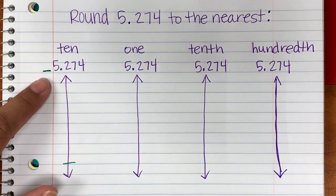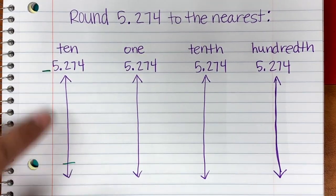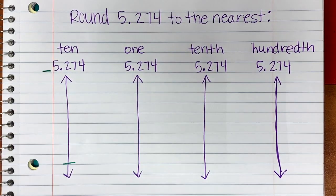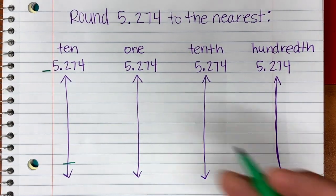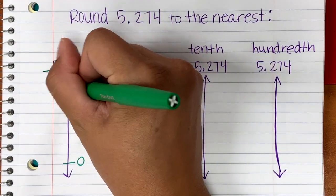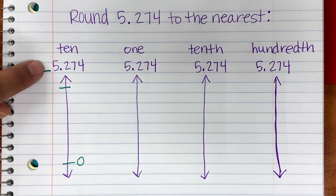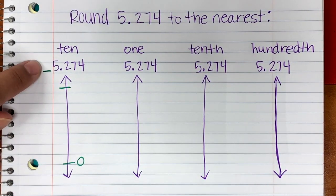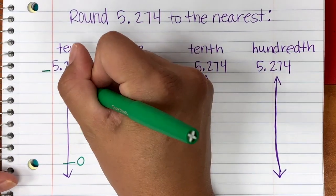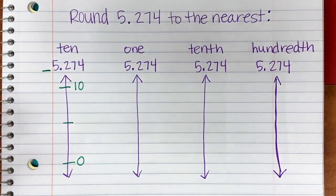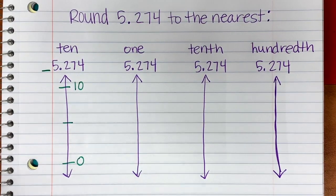Whatever number you put as the floor, everything after it is also a zero. So if we have zero tens, our floor is zero. Then we're going to add one to that same place — so if we had zero tens, now we have one ten for our ceiling. The ceiling will be ten, because one ten is ten.